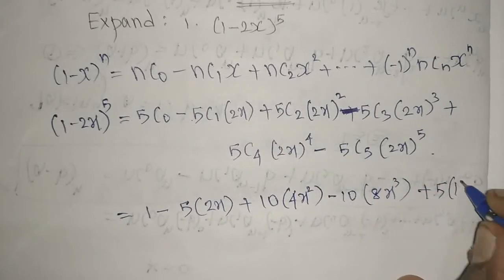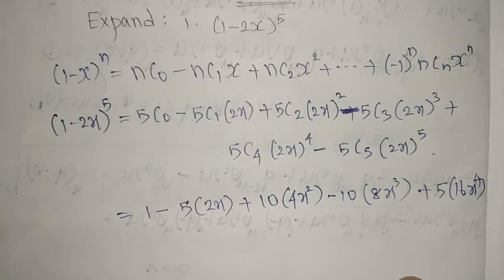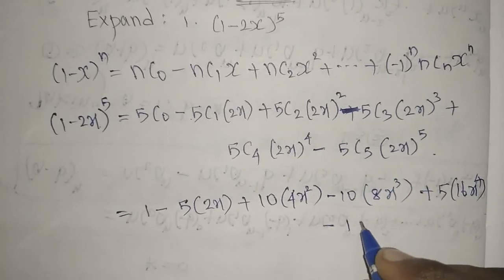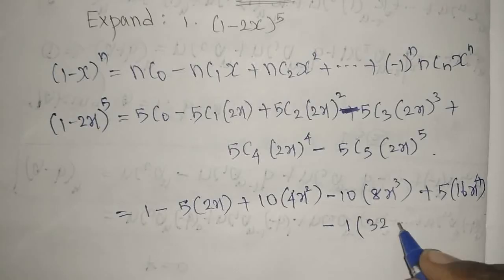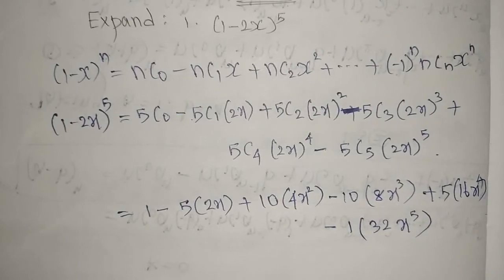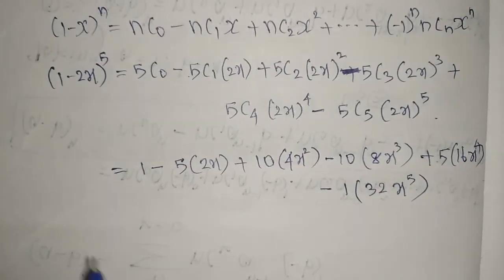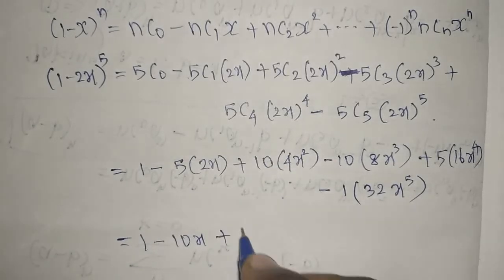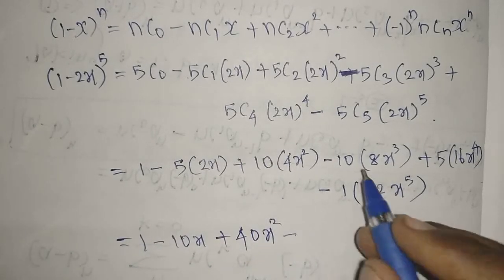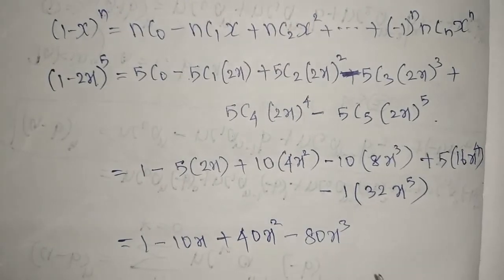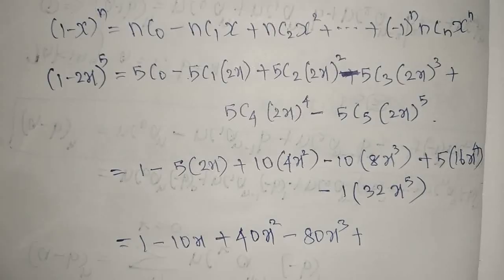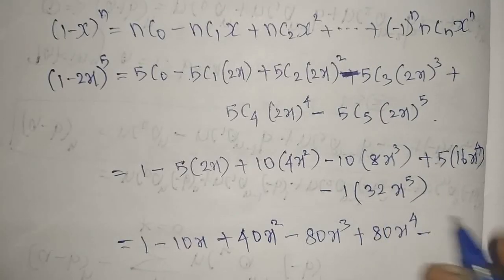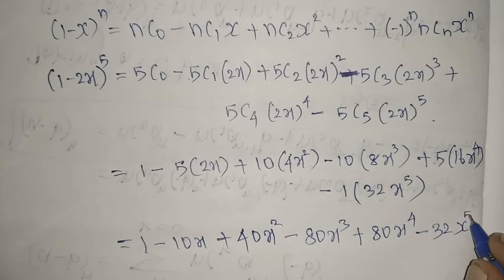For 5C5, both indices are the same so the value is 1. Then (2x)^5 equals 32x^5, giving minus 1×32x^5 = minus 32x^5. Putting it all together: 1 minus 10x plus 40x^2 minus 80x^3 plus 80x^4 minus 32x^5.